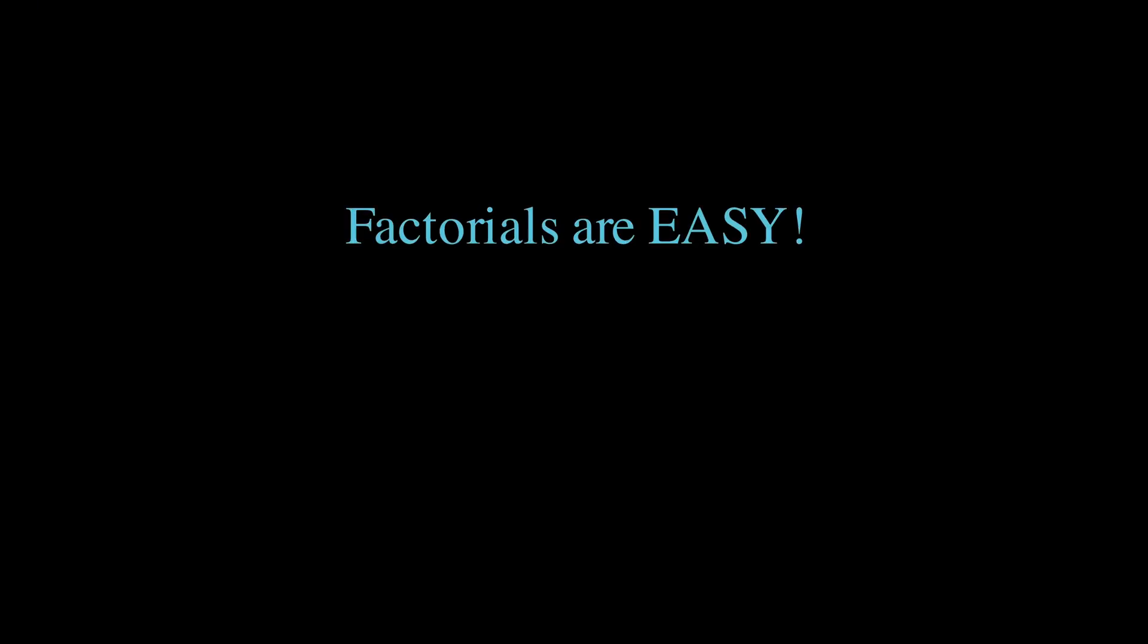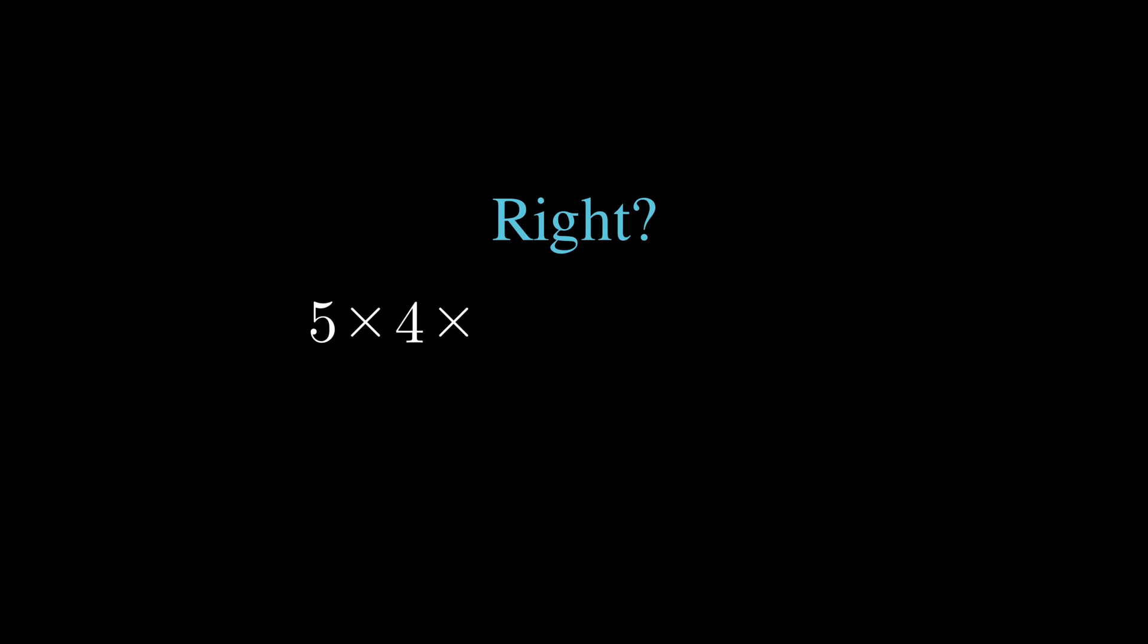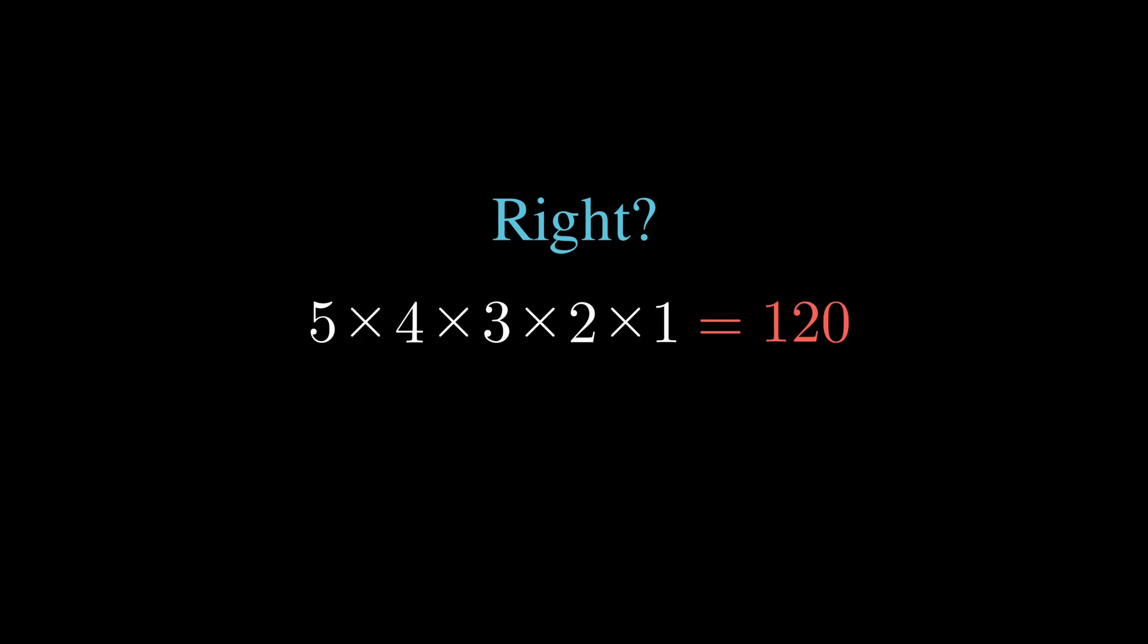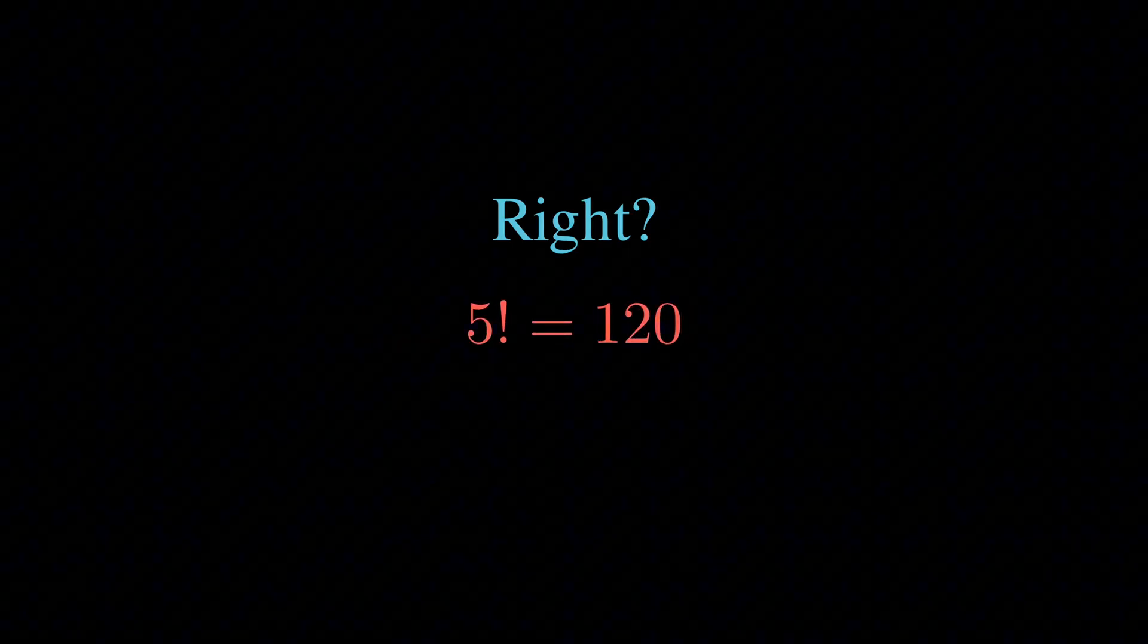So you know how factorial works, right? You take a number like 5 and multiply it by 4, then by 3, then by 2, then by 1, and you get 120, which we write as 5 factorial.